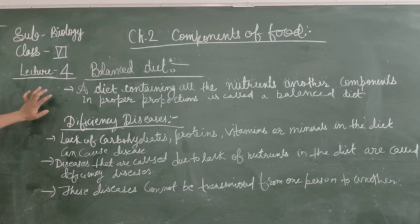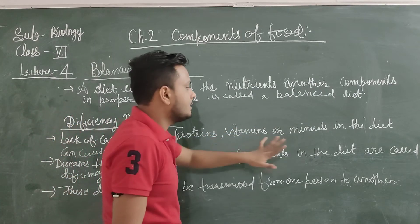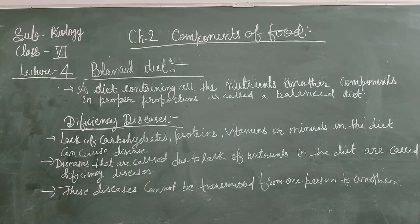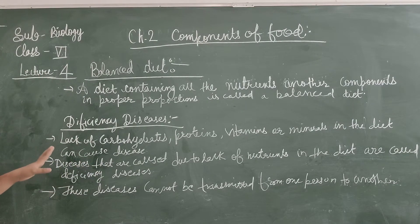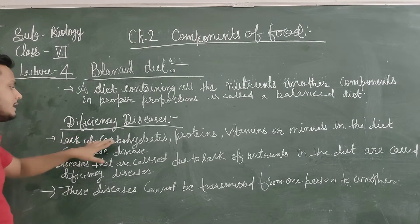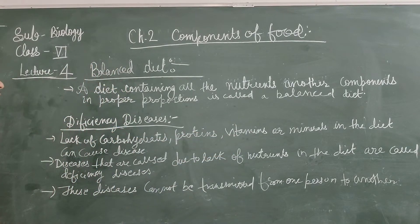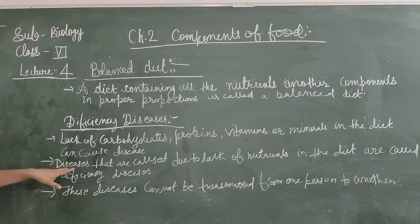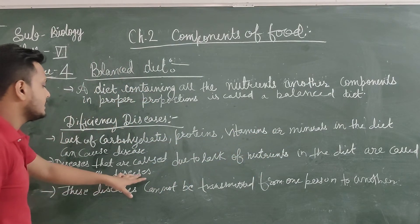Now, there are some diseases called deficiency diseases. Lack of carbohydrates, proteins, vitamins, and minerals in the diet can cause them. If any nutrient our body needs is lacking — lack means shortage — so if carbohydrates, proteins, minerals, or vitamins are reduced in the diet, these diseases that are caused due to the lack of nutrients are called deficiency diseases.